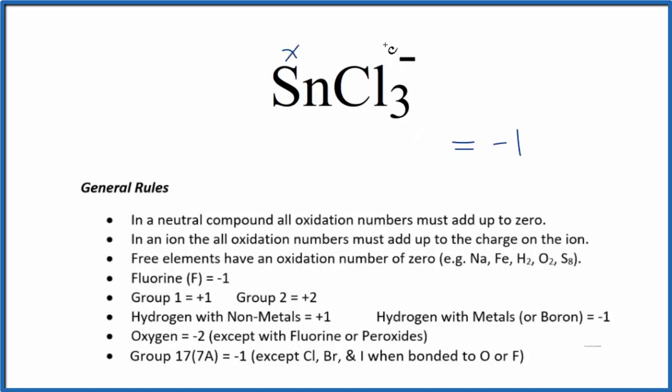And then chlorine, that's almost always - it's in group 17/7A, so that's almost always minus one. So this is each chlorine minus one. We could say X plus that minus one, we have three chlorines, so times three equals minus one.